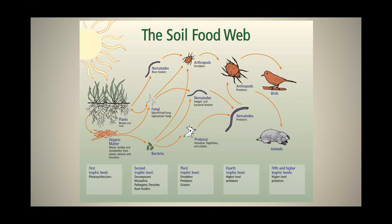Looking at the soil food web: the first level is plants and organic matter. The second level is decomposers — microorganisms that live with the plant, including pathogens, parasites, and root feeders. The third level introduces shredders, predators, and grazers — these don't eat plants, they eat bacteria, fungi, and pathogenic organisms. The fourth level is higher predators eating microorganisms of the third and second levels. At the fifth level, everything eats something below it, releasing nutrition. These trophic levels all have to be present to be functional.